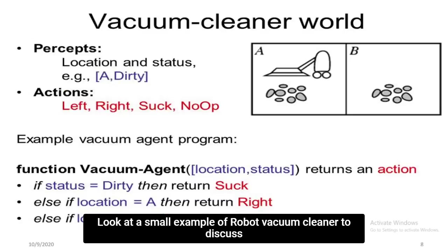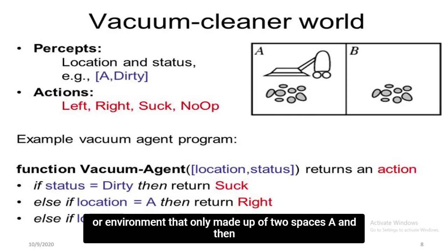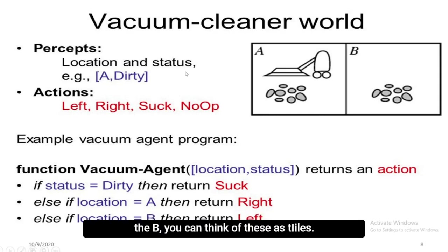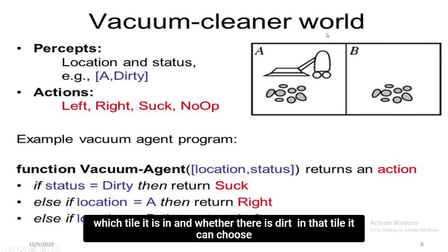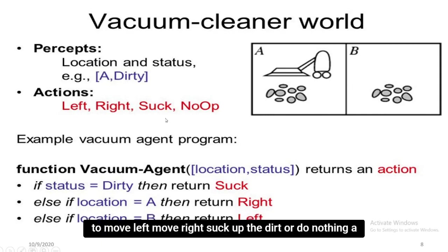Let's look at a simple example of a robot vacuum cleaner. We can make up a simple world or environment made up of only two spaces, A and B — you can think of these as tiles. They are arranged in this world. Our vacuum agent perceives which tile it is in and whether there is dirt in that tile. It can choose to move left, move right, suck up the dirt, or do nothing.